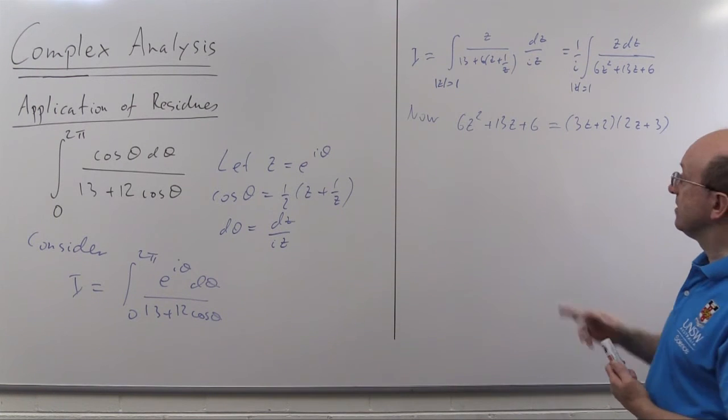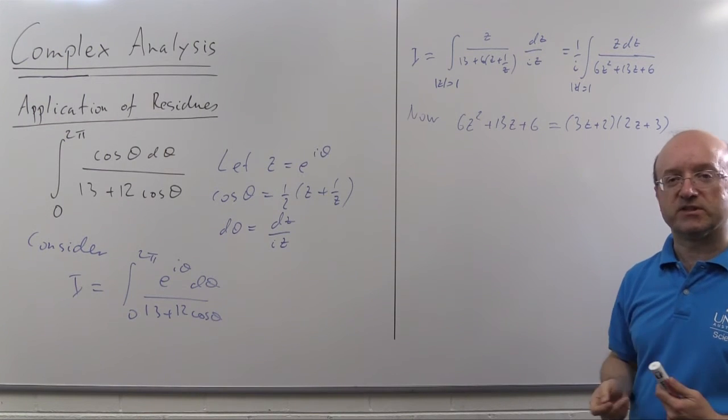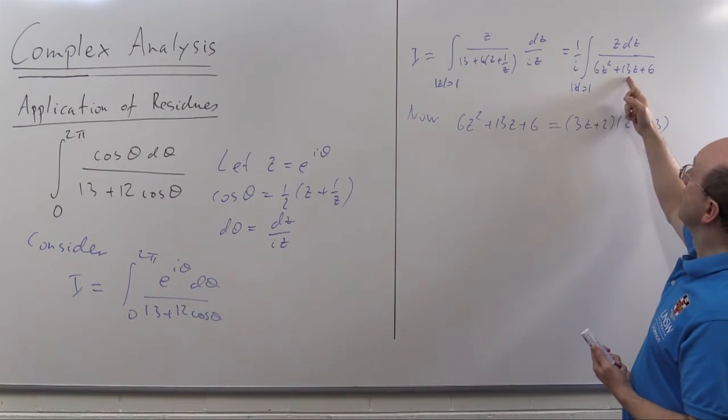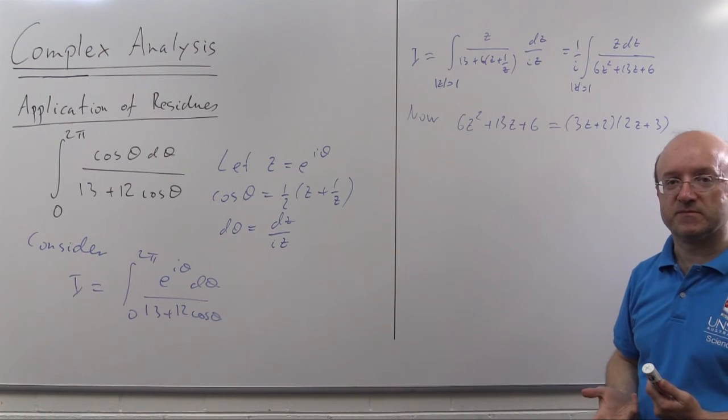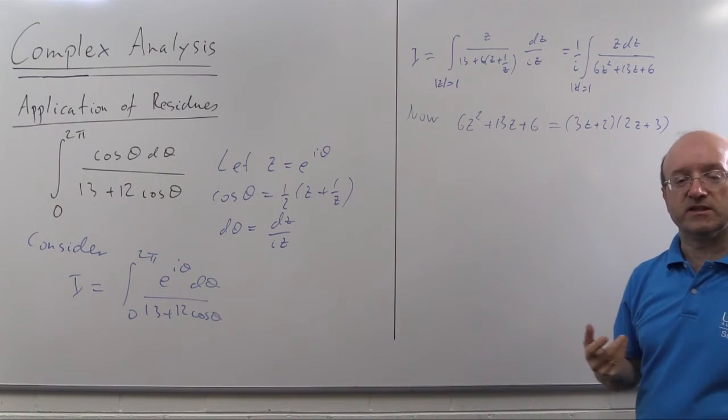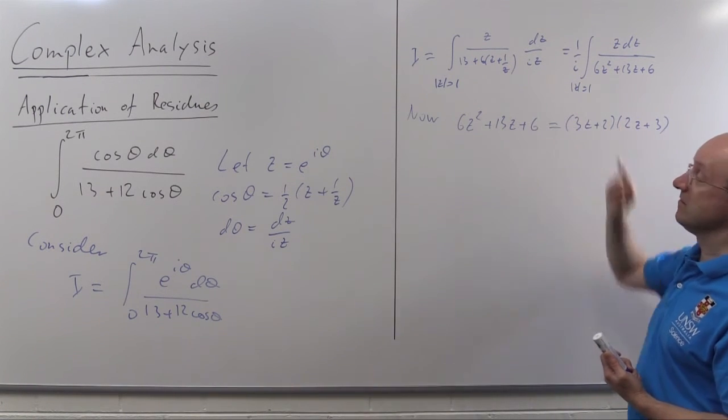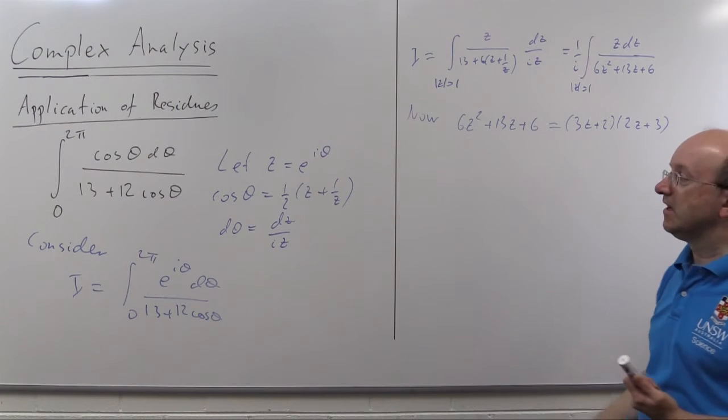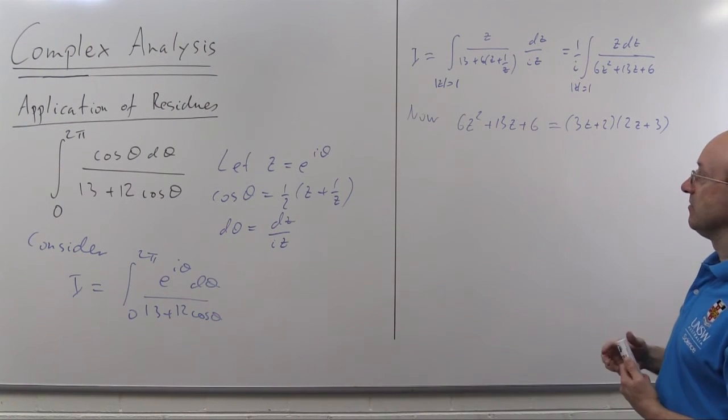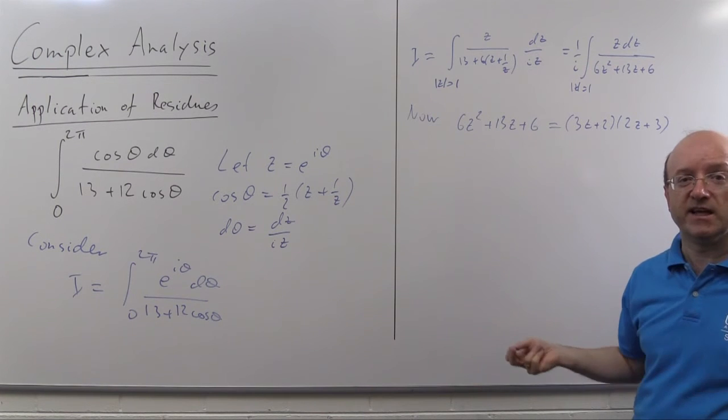What type of singularity is it? Well, given I've factorised this this way, we have simple zeros of the denominator, so we must have simple poles. So I've only got to find the residue at the simple pole, z is minus 2 thirds, multiply this expression by 2 pi i to find out that i, take the real part, and I've done the problem. No integration whatsoever. The only calculation I've got left to do is a simple limit.